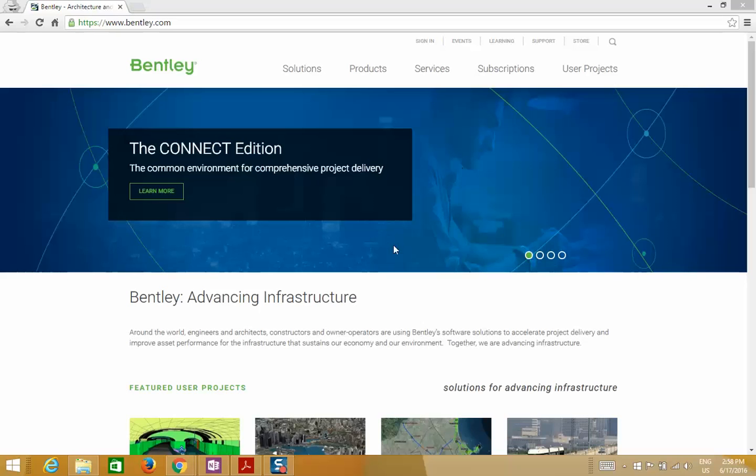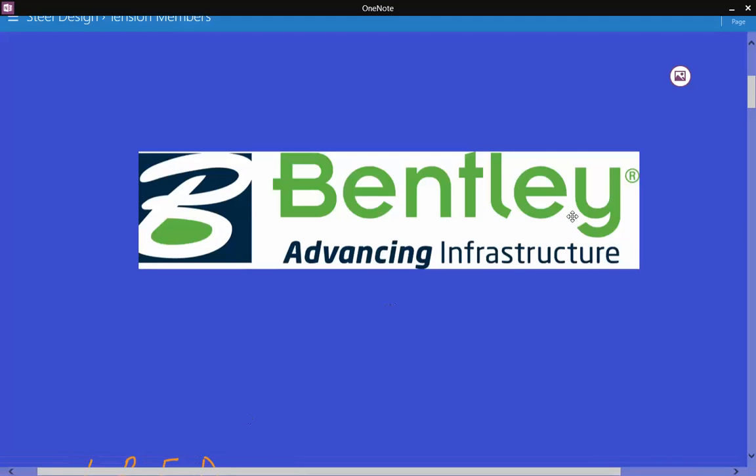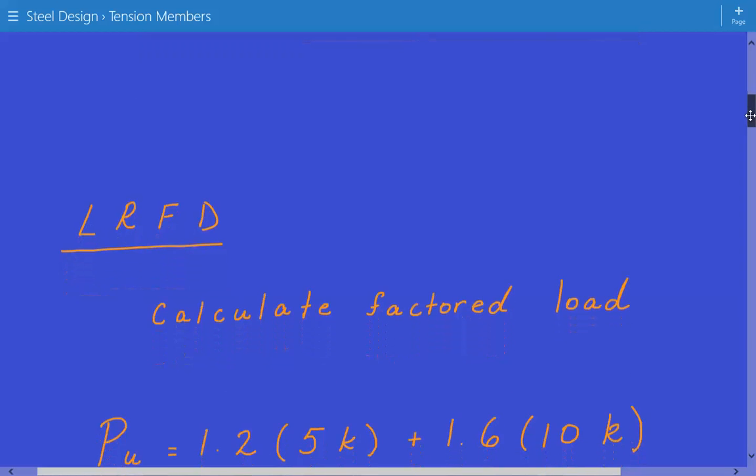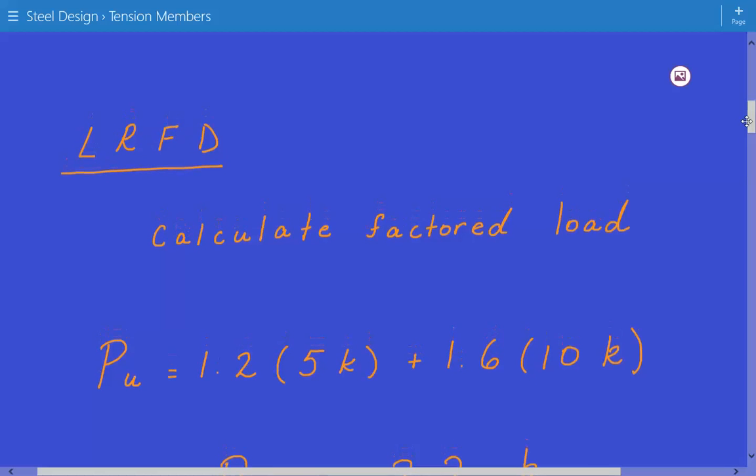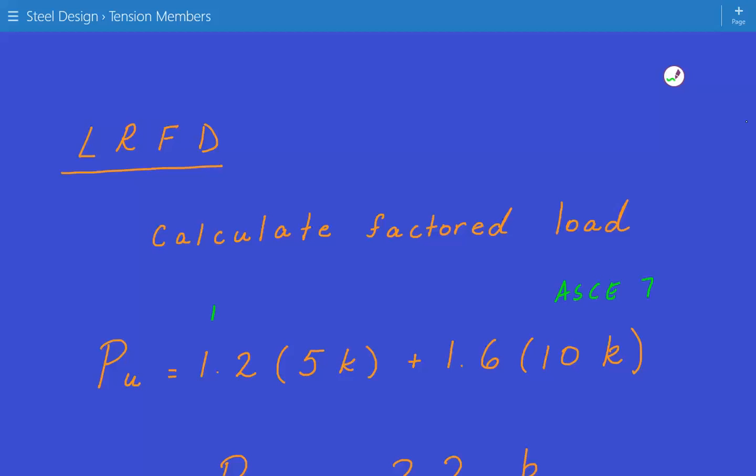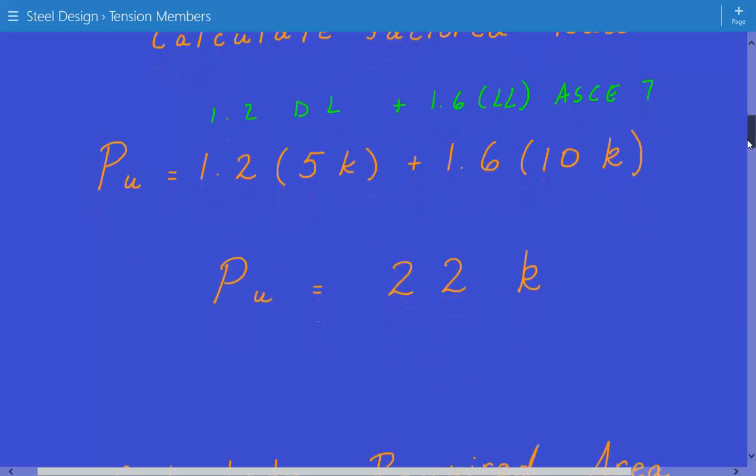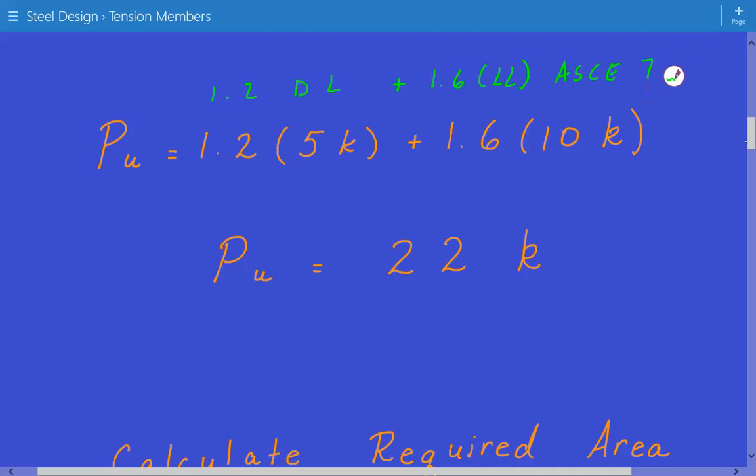Now going back to our threaded rod problem. We'll use the LRFD approach first. The first thing we have to do is calculate the factored load using ASCE 7 load combinations. For LRFD, it's going to be equal to 1.2 times dead load plus 1.6 times live load. So that's 1.2 times 5 kips plus 1.6 times 10 kips. The factored load is equal to 22 kips.